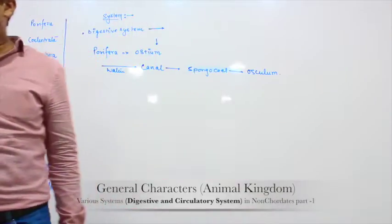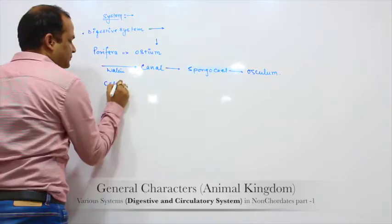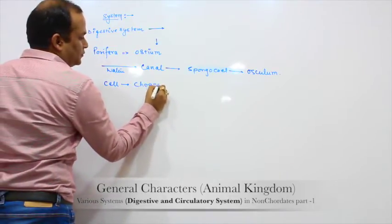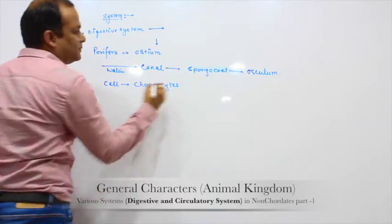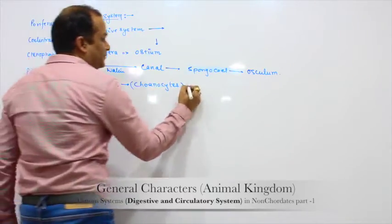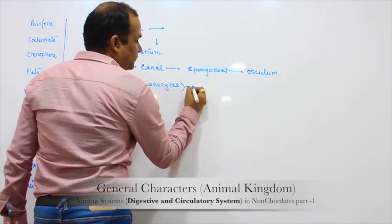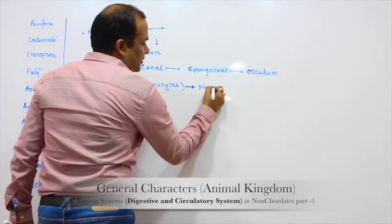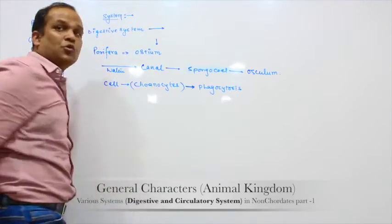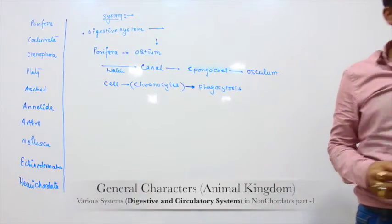At every place there is a particular cell which does the work — and that cell is called choanocytes. What does it do? It does phagocytosis. Clear? So the choanocytes perform phagocytosis on the food particles.